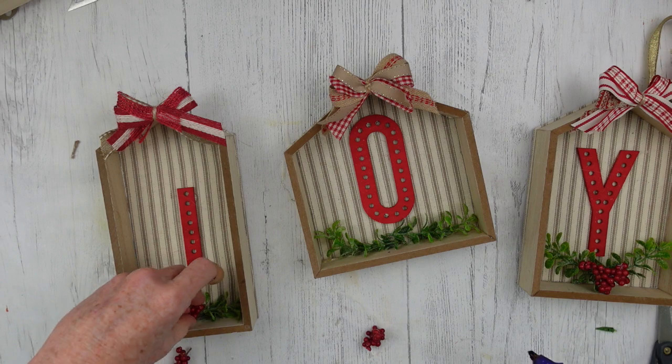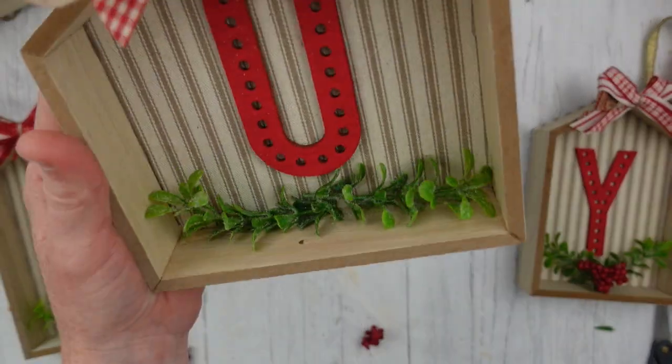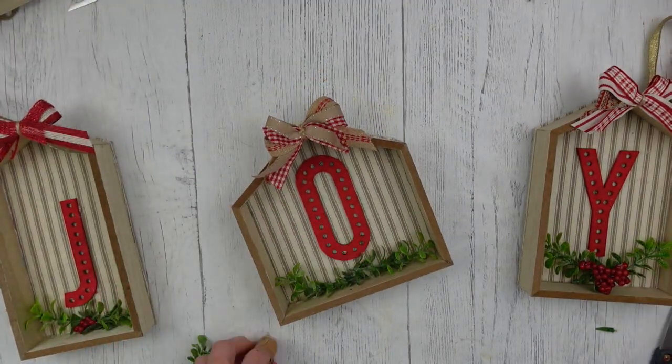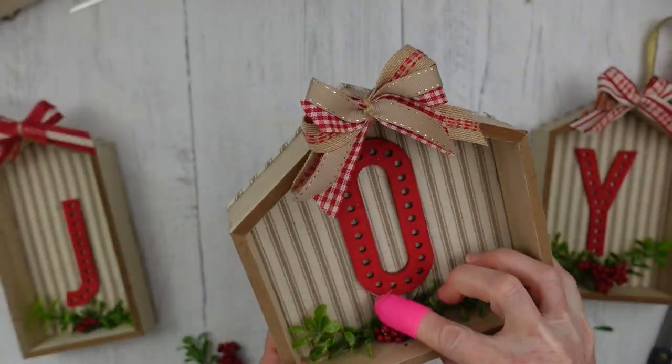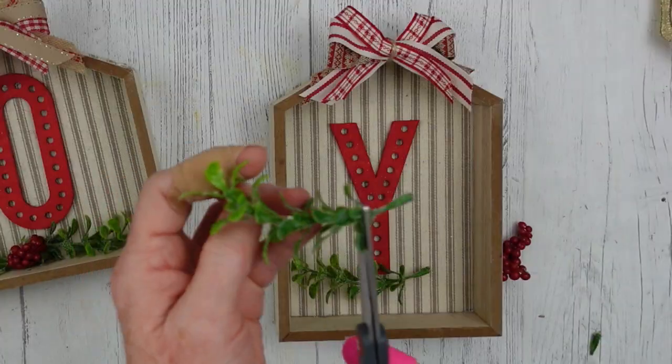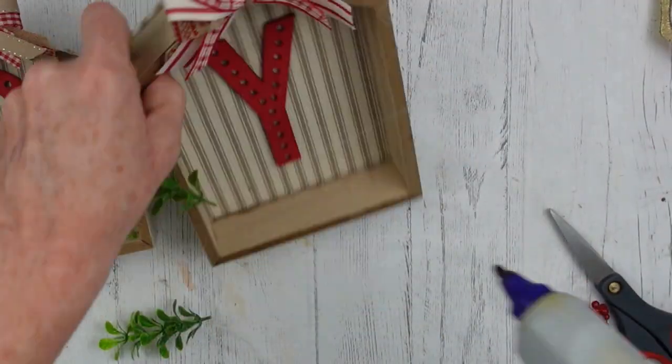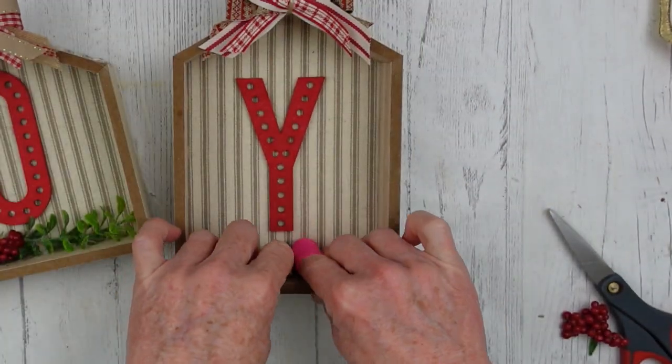Y'all can use regular stickers. You can use chip wood. You don't even have to use the word joy. You can put little snowmen or the little wood ornaments that are Christmas trees that you get from Dollar Tree. You can put those in there instead. That would be really cute. Just whatever style and whatever your preference is. So we're going to do the same thing to each and every one of those.